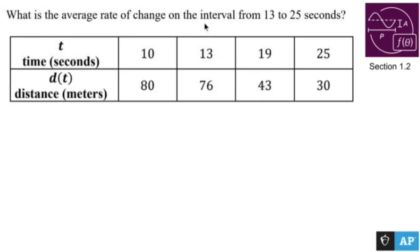What is the average rate of change on the interval from 13 to 25 seconds? Well, you're 13 and you're 25. The average rate of change formula is f(b) minus f(a) over b minus a. That's the slope formula, boys and girls. So we'll call you a, we'll call you b, which makes you f(a)